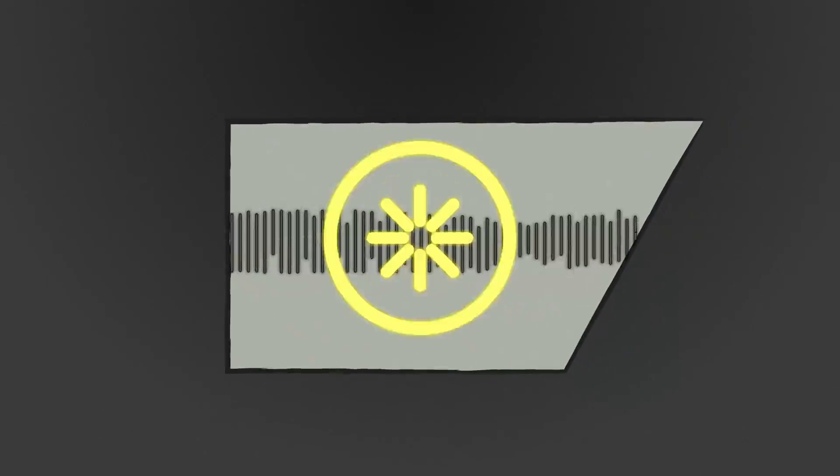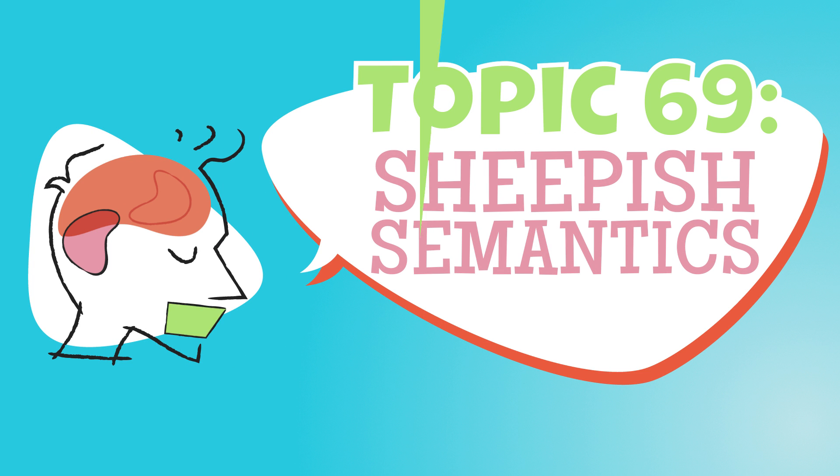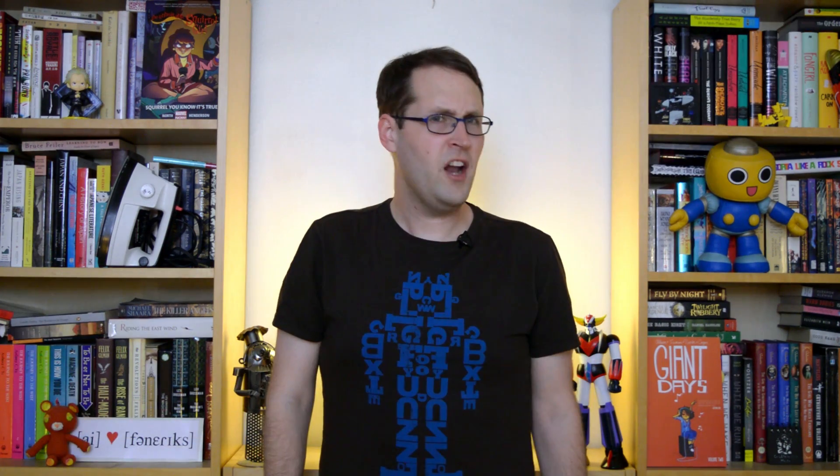I'm Moti Lieberman, and this is The Ling Space. One of the guiding principles of semantics is compositionality. This principle says that the meaning of an expression is composed out of the meaning of its parts. In other words, when we work out the syntactic structure of a sentence, every part of our tree has to have some kind of meaning attached to it, along with some rule telling us how to connect those meanings together.